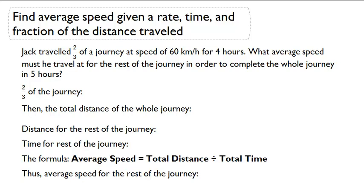Find average speed given a rate, time, and fraction of the distance traveled. Jack traveled two-thirds of a journey at a speed of 60 km per hour for four hours. What average speed must he travel at for the rest of the journey in order to complete the whole journey in five hours?